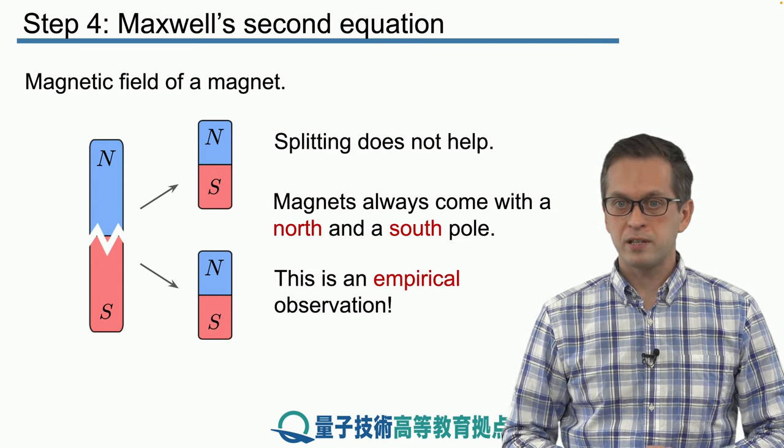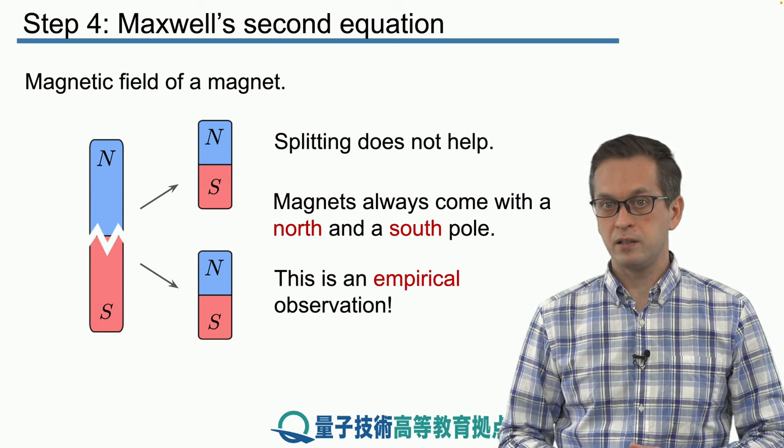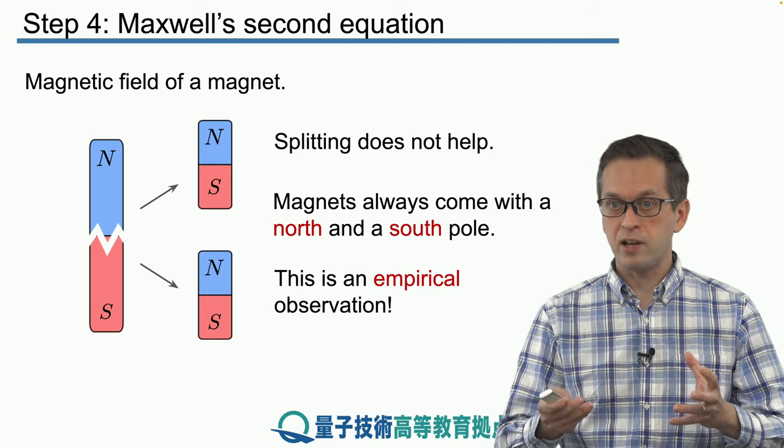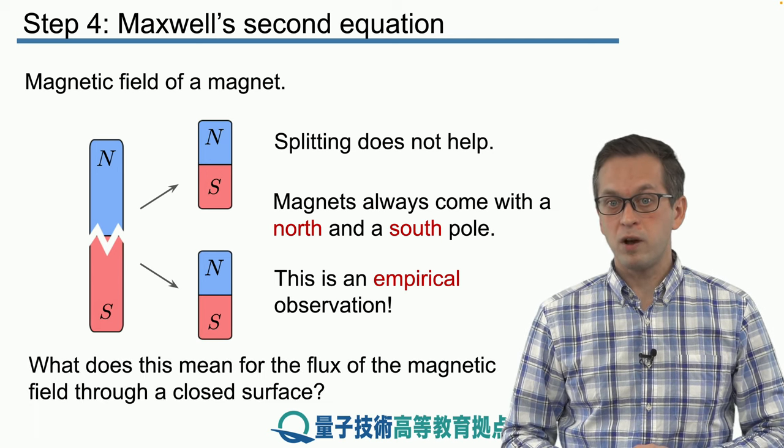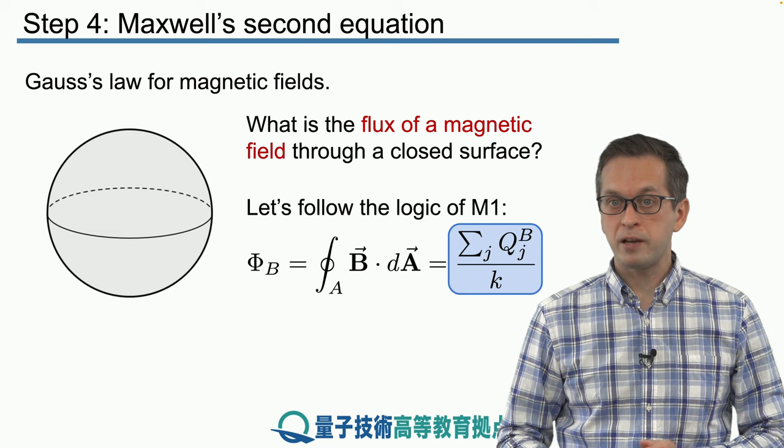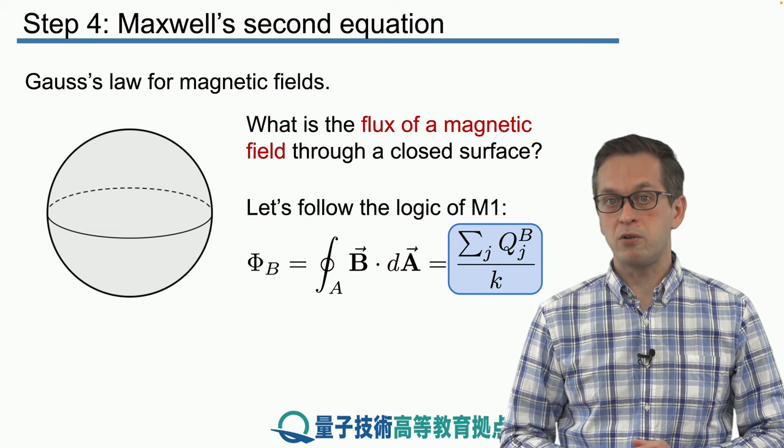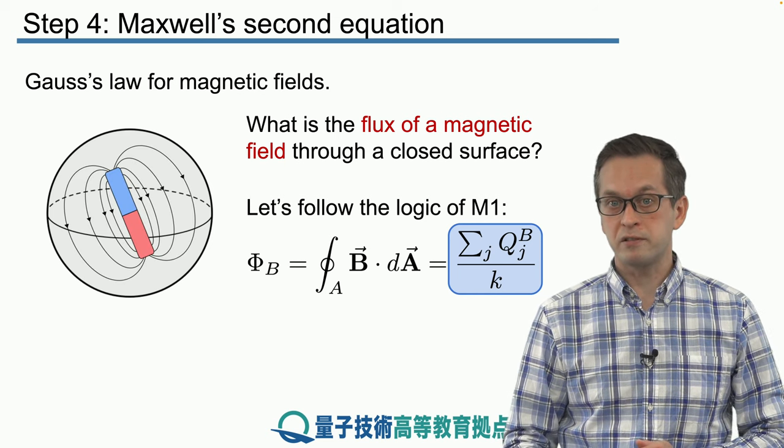So how does this affect our Gauss's law for magnetic fields? How does it affect the flux going through a closed surface? Well, what we can do is we can take our bar magnet and we can stick it inside our spherical surface.